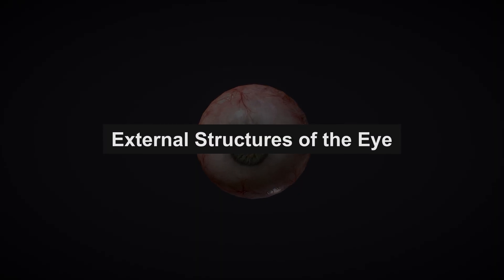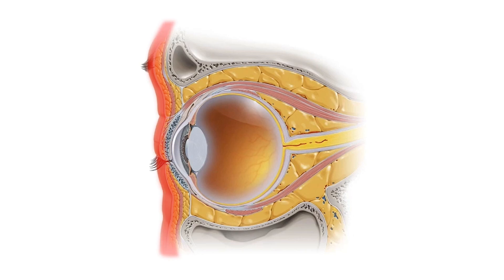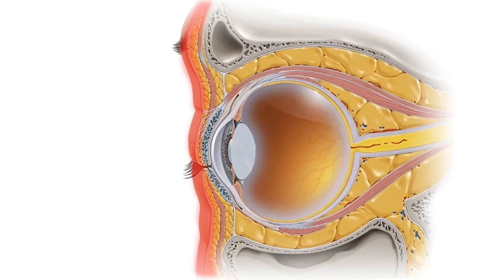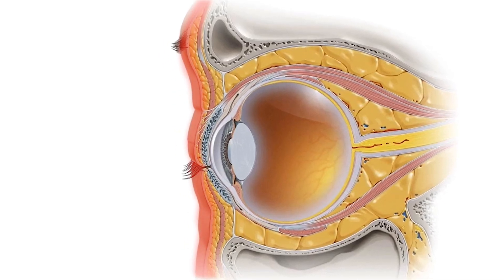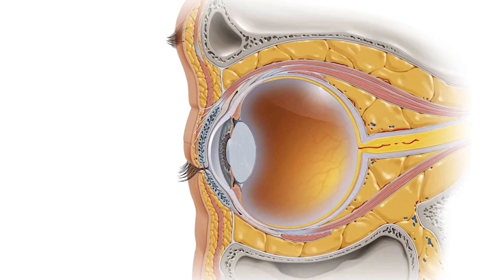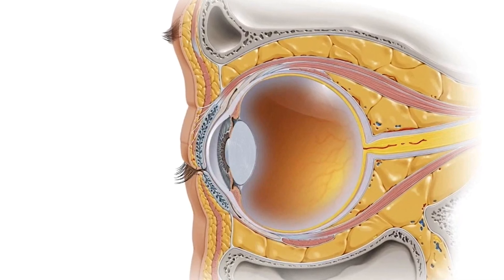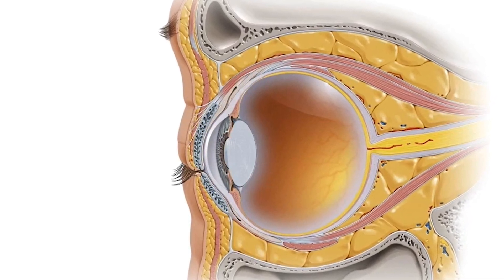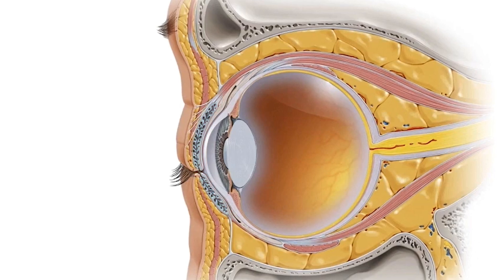The external aspects of the eye are designed primarily for protection and maintenance of a clear optical pathway. The eyelids, eyelashes, and conjunctiva are all critical in shielding the eye from foreign particles and excessive light, while also helping to distribute tears evenly over its surface.